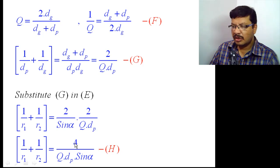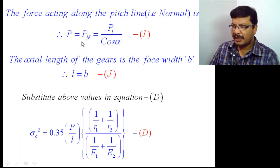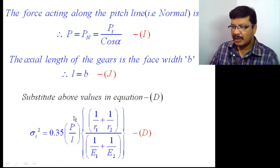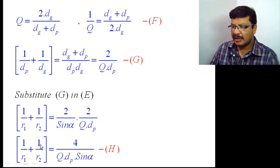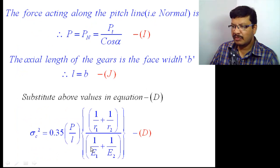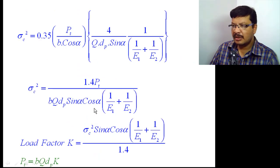Now, p = pn (the resultant force), where pn = pt / cos(alpha), and length l equals face width b. Substituting pn and l into the contact stress equation — p becomes pt/cos(alpha), l becomes b, and 1/r1 + 1/r2 is the value just calculated. The term 1/E1 + 1/E2 is a material property that remains constant for any component, whether cylinders or gear teeth.